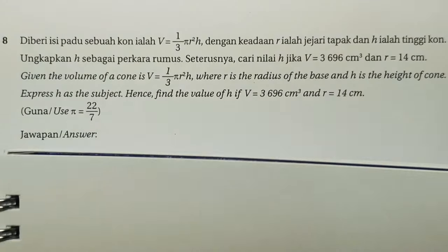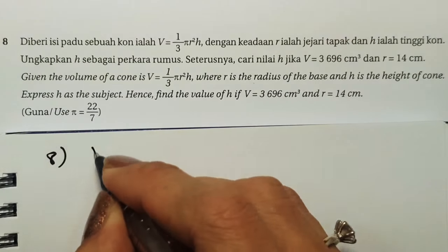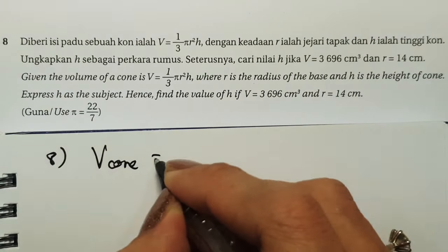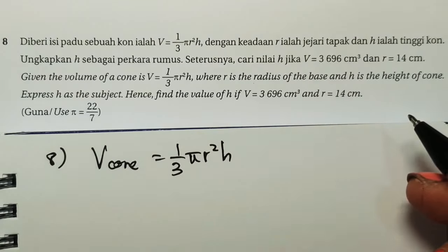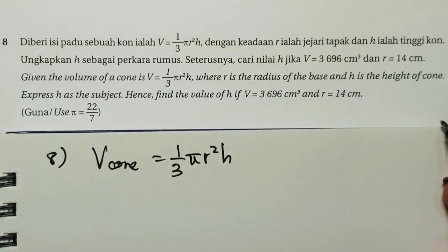Given that the volume of a cone, the volume of the cone is given. It is one third of pi r squared h, where r is the radius of the base and h is the height of the cone.